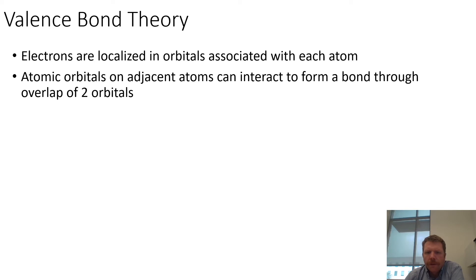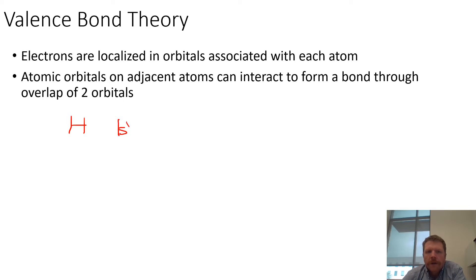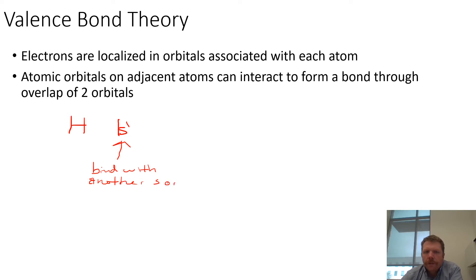One of the things that's very important is that these orbitals have to basically be the same. So if we think about a hydrogen atom, it has an electron configuration of 1s1 — there's one electron in that 1s orbital. What that means is that this one electron is able to form a bond with another s orbital. So what it needs is a complementary s orbital that it can share with.